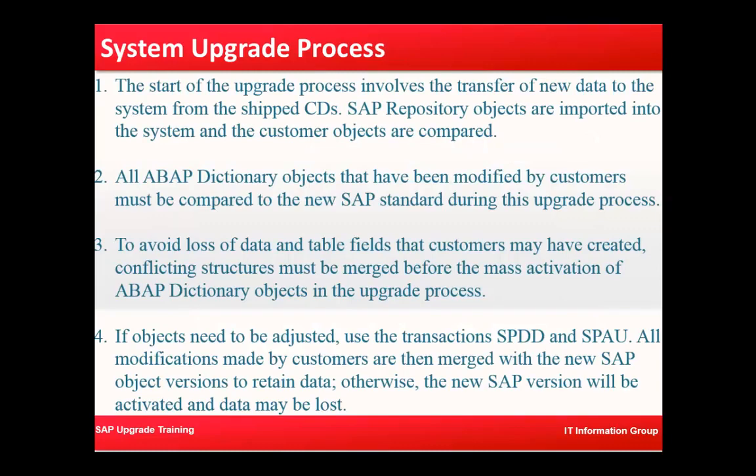The start of production process involves the transfer of new data to the system from the CDs shipped by SAP — and in today's environment you can straight away download those upgrade series. SAP repository objects are imported into the system and customer objects are compared. All ABAP dictionary objects that have been modified by customers must be compared to the new SAP standard during the upgrade process.